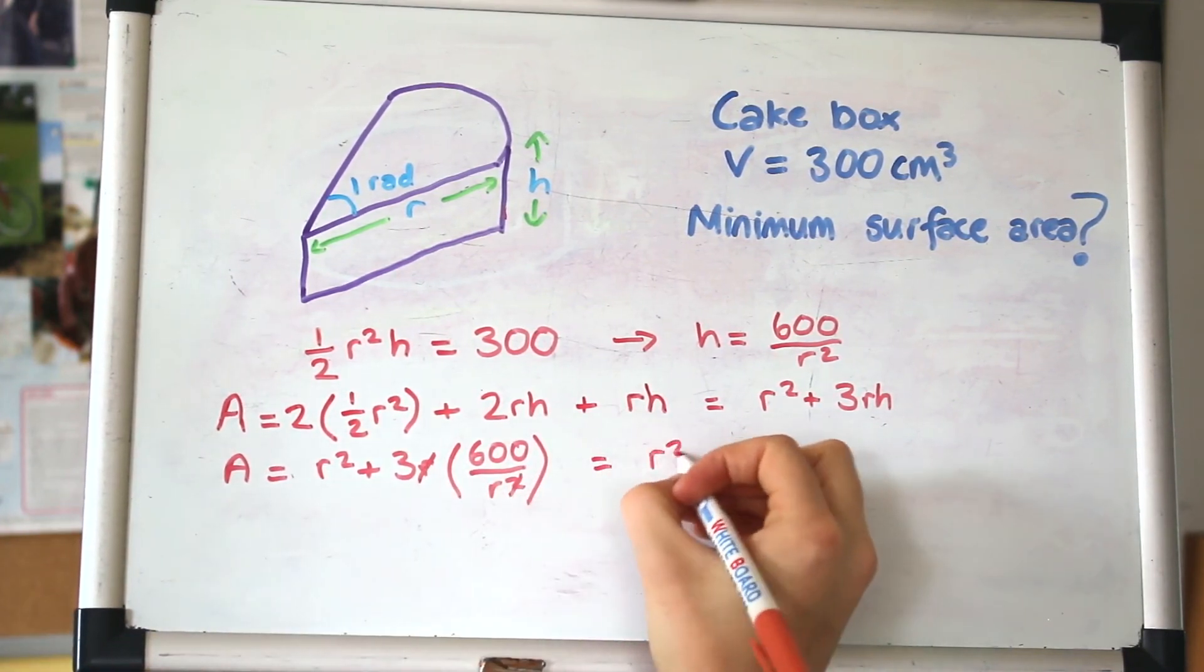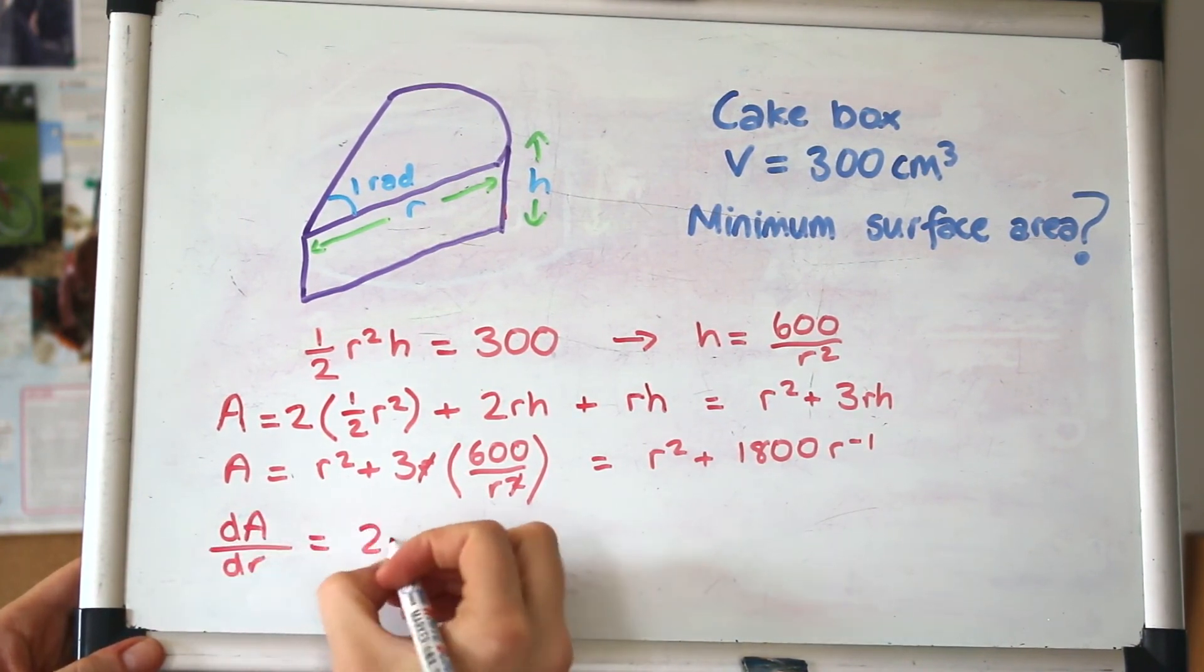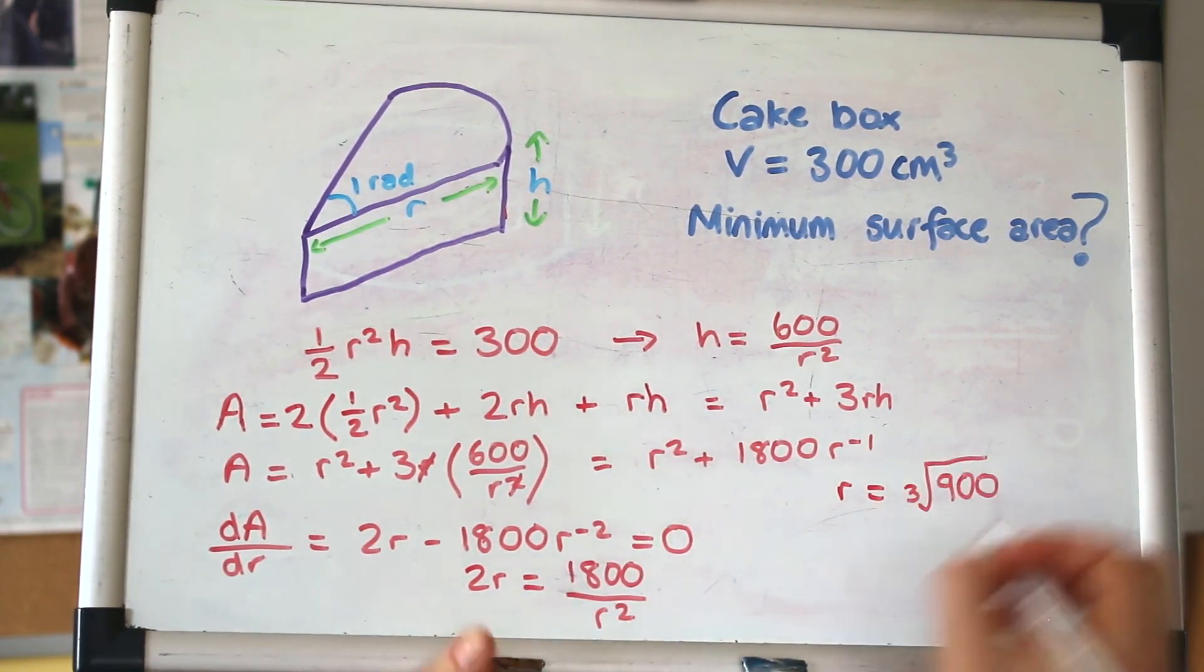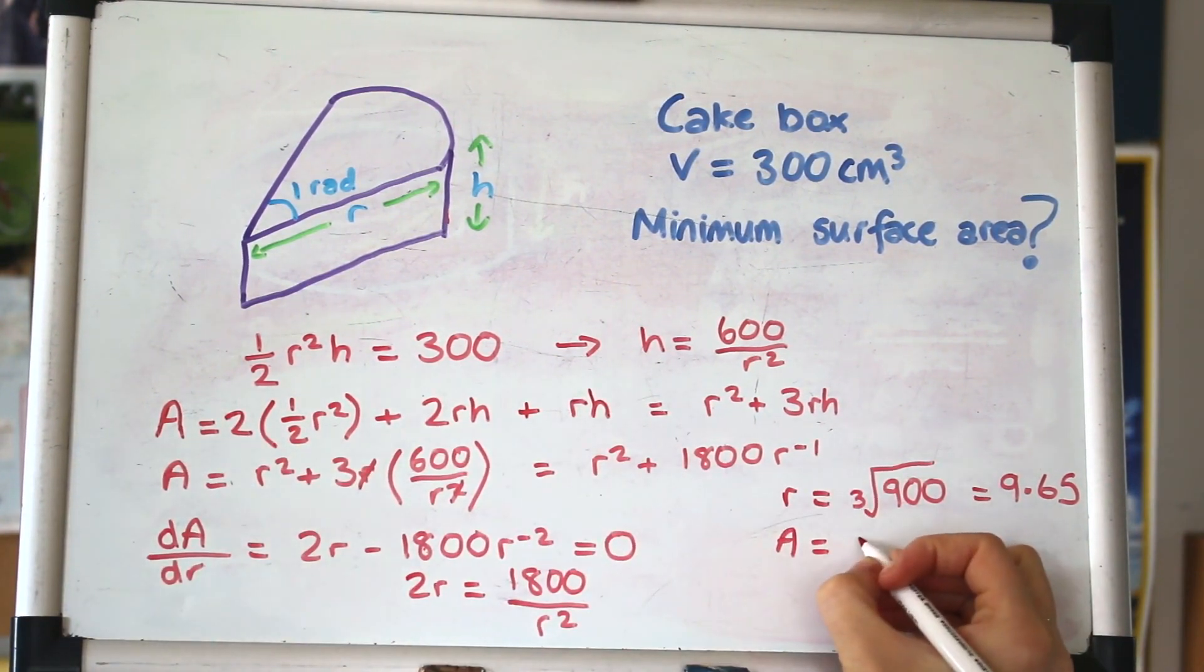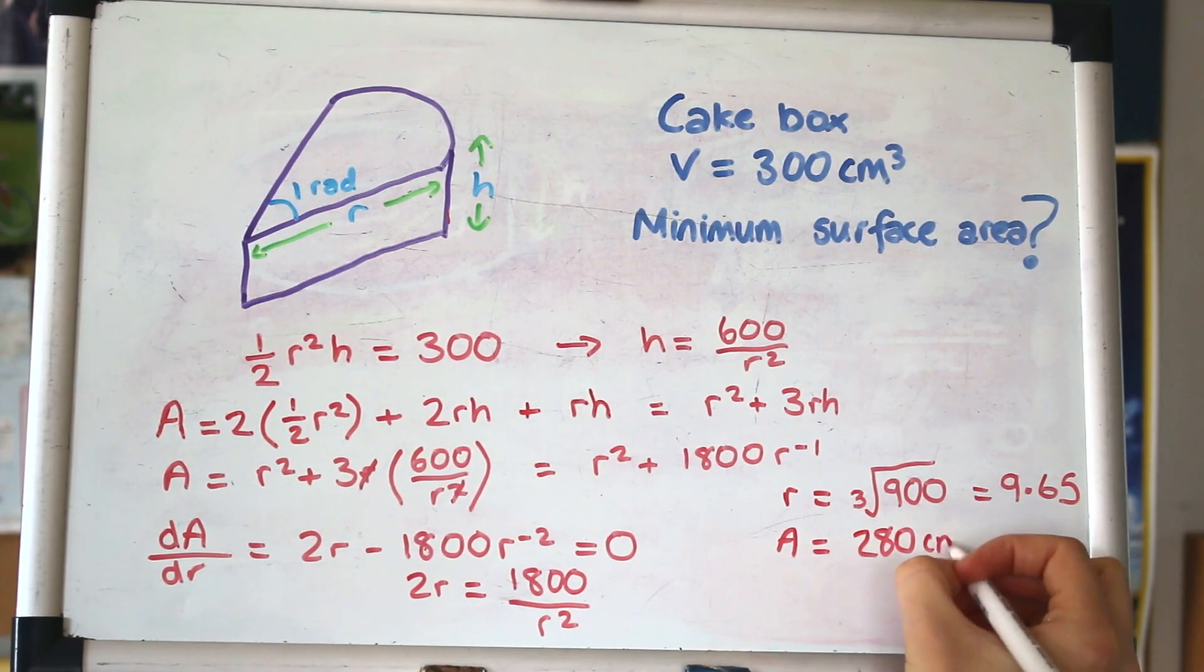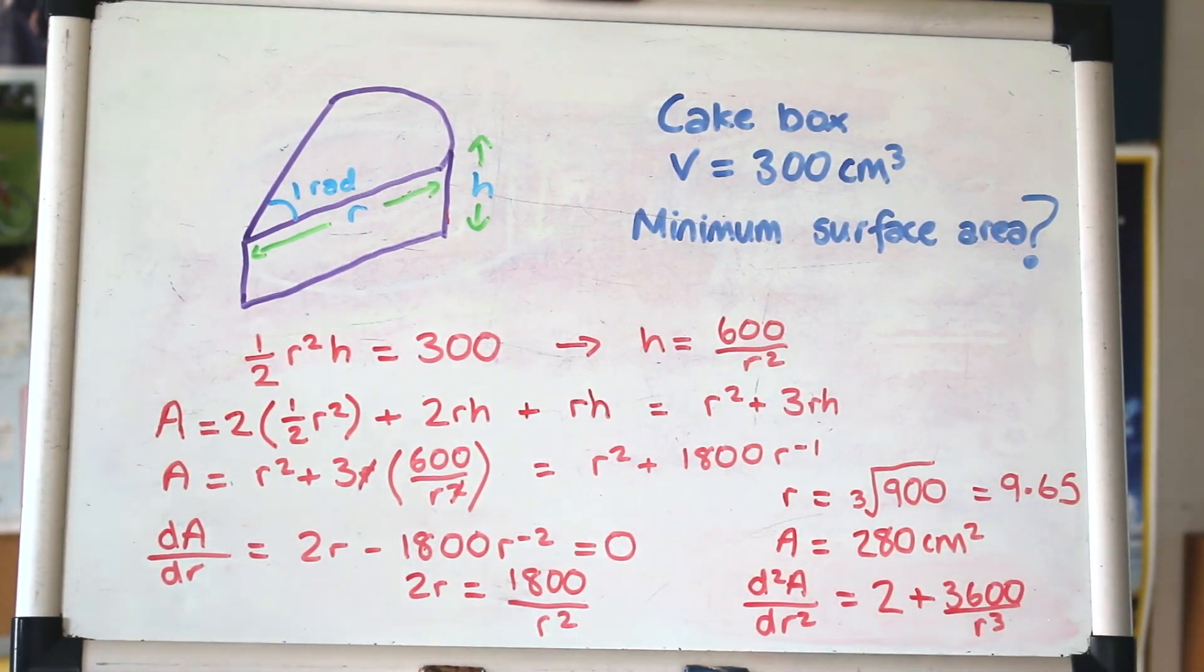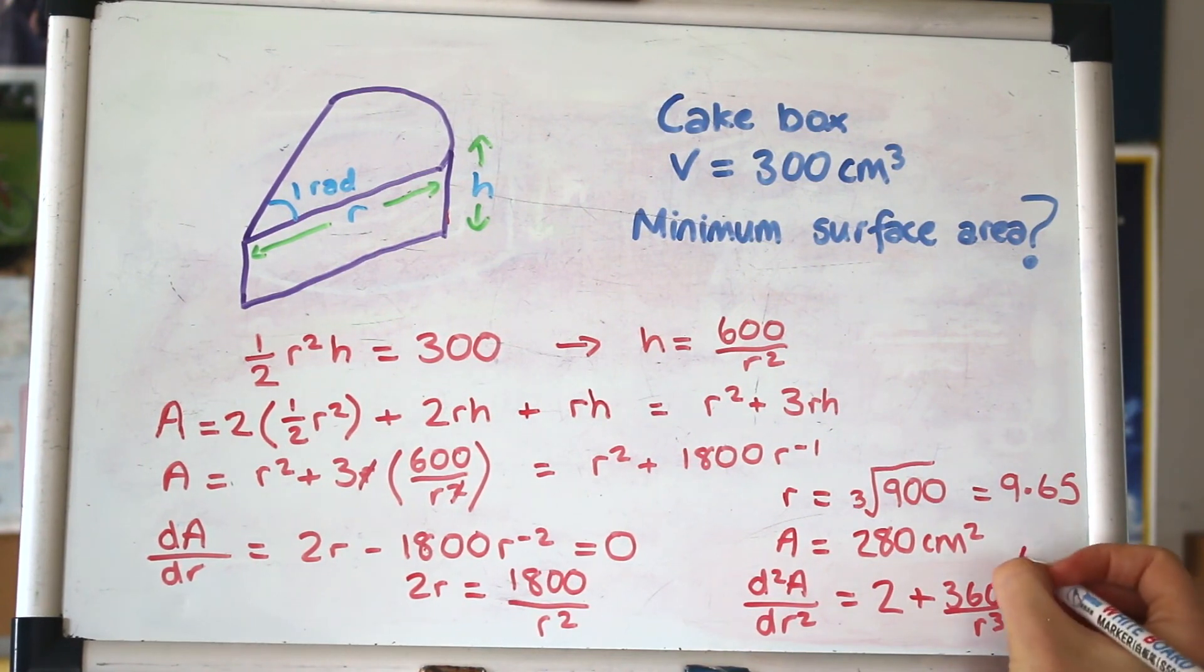Substituting in, A = r² + 3rh = r² + 1800r⁻¹. Let's differentiate: dA/dr = 2r - 1800r⁻². Setting that equal to 0, r = ∛900 = 9.65. Putting that value of r back into the expression for A, I get A = 280 cm². To prove it's the minimum definitely, we take the second derivative, which is 2 + 3600r⁻³, which is a positive value when you put in your value of r. That's positive, which means it's definitely a minimum.